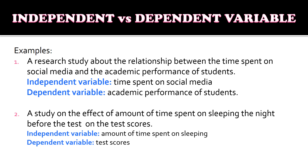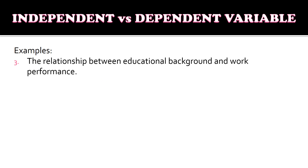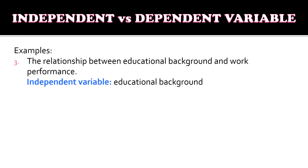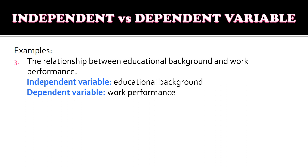For example number three, the relationship between educational background and work performance. The independent variable is the educational background and the dependent variable is the work performance. It could be that if the educational background of the worker is high, their work performance is also high, and vice versa.